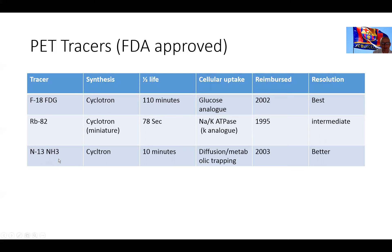One of the least used PET agents is N-13 ammonia, which has a short half-life and requires a cyclotron. It enters the cell through a diffusion metabolic trapping pathway. It has been reimbursed and approved for clinical use in the US since 2003. Its resolution is intermediate, and it has other specific issues that will be discussed in future sessions.